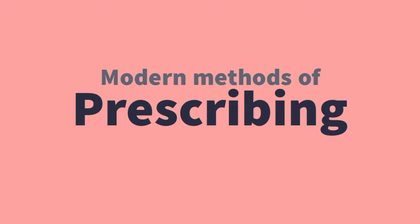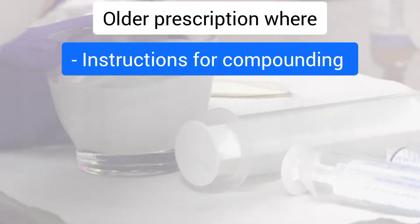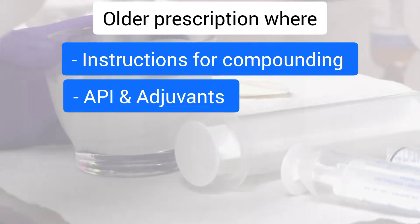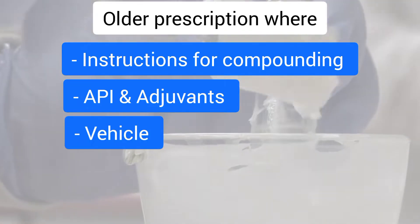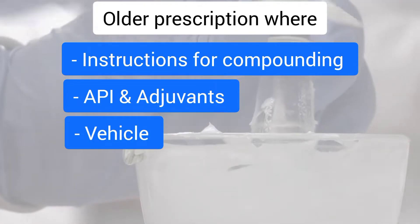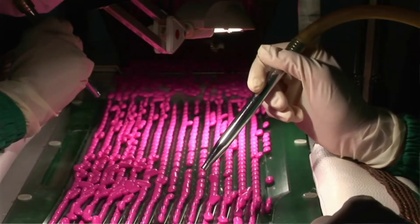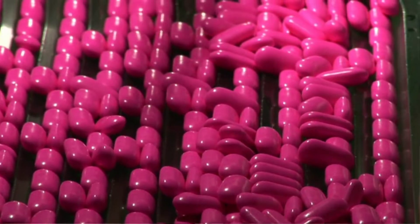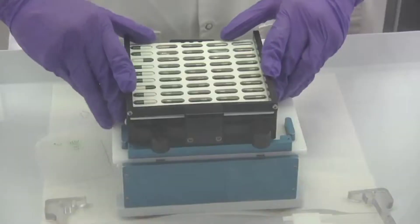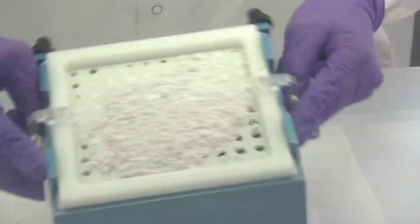First, you have to understand that in olden days, compounding was there. That's why we were preparing a drug — what ingredients, what adjuvant, what vehicle to add — all of these instructions were available, and you would do it in the pharmacy. Now, all drugs are in ready-made, packed form.